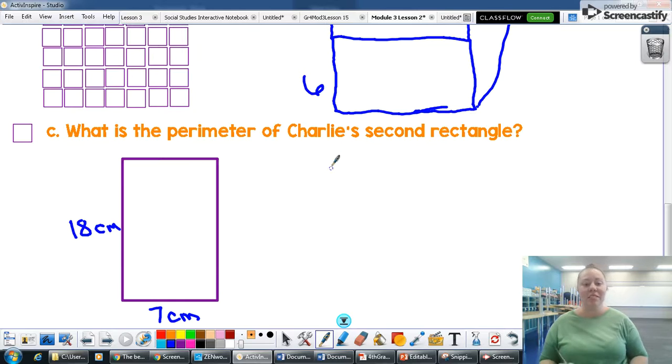So we said that the side length was 18 centimeters and the length was seven. Perimeter, remember, is the distance around the outside. And so I know this opposite side is also 18 centimeters. And the top is also seven centimeters. They match their opposite side. So to find the perimeter, I just need to add these four numbers together.